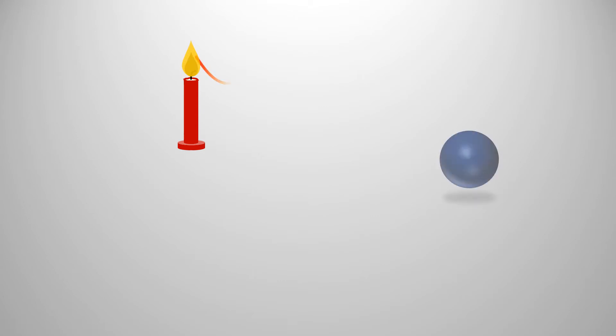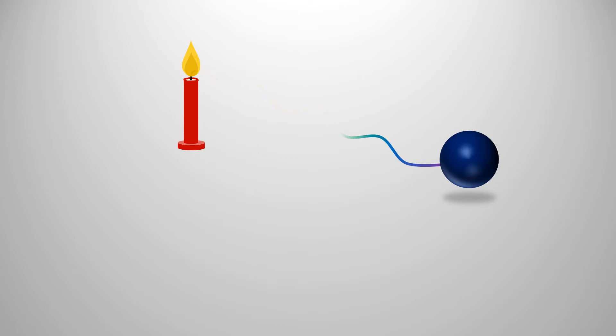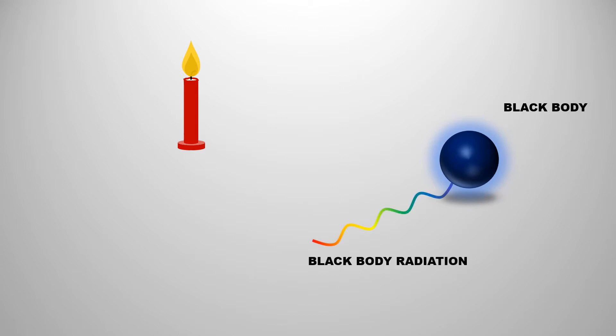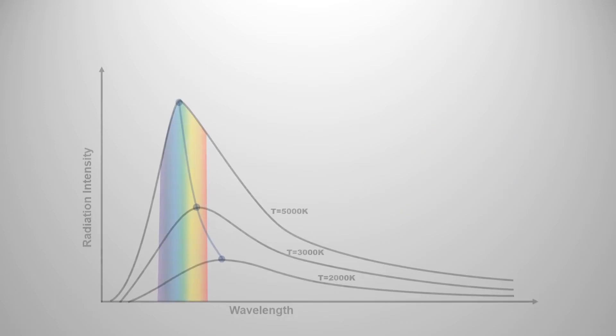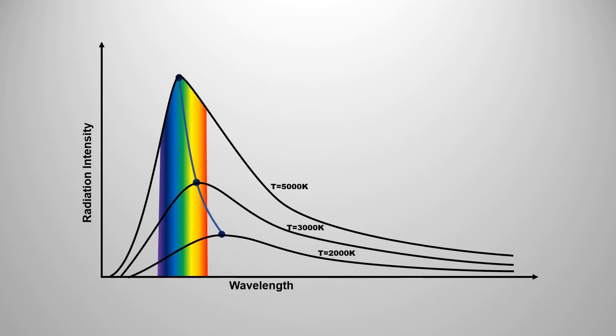Same as Wien's, Lord Rayleigh and James Jeans were also trying to understand how a body glows. From blackbody radiation, we know that when a body absorbs radiation of all wavelengths to glow, it is called a blackbody. The radiation that the blackbody emits while glowing is called blackbody radiation. A blackbody emits different amounts of radiation at different wavelengths.